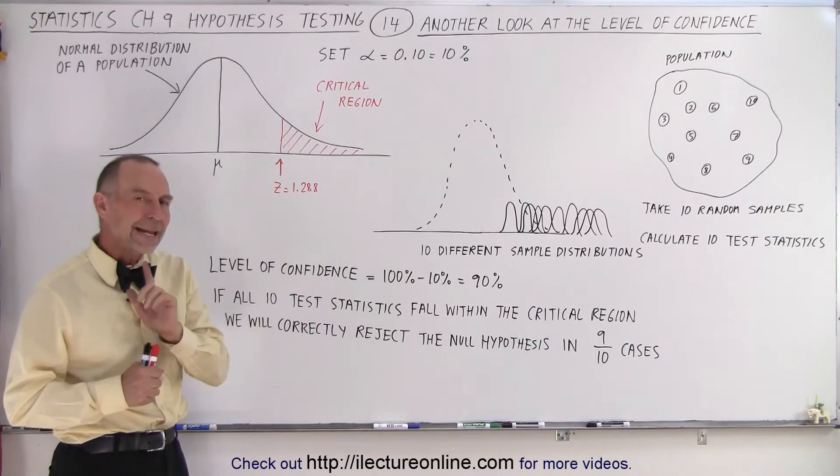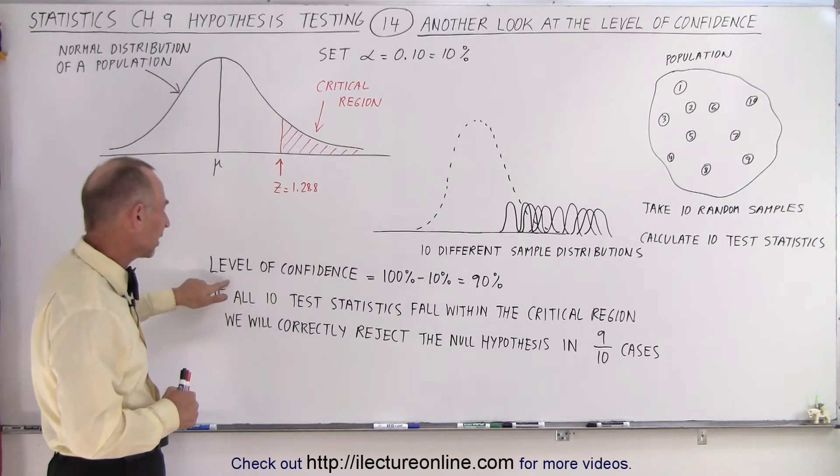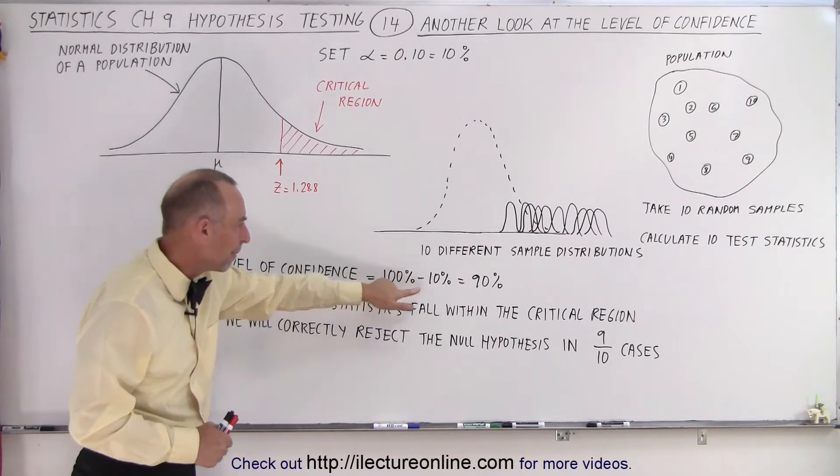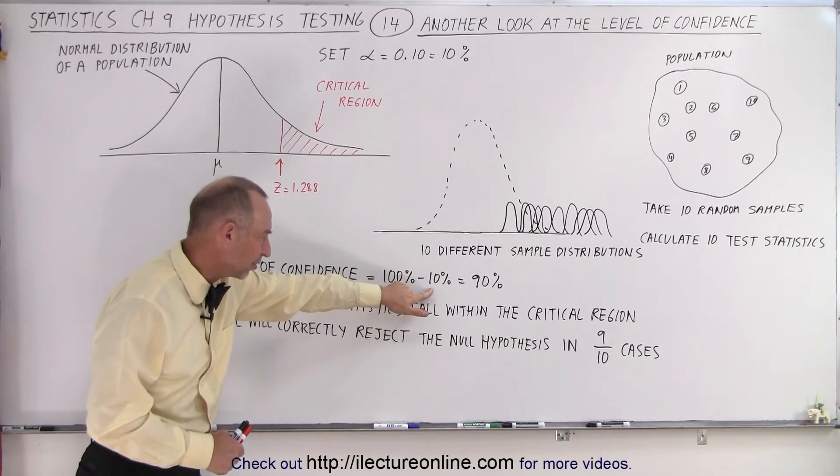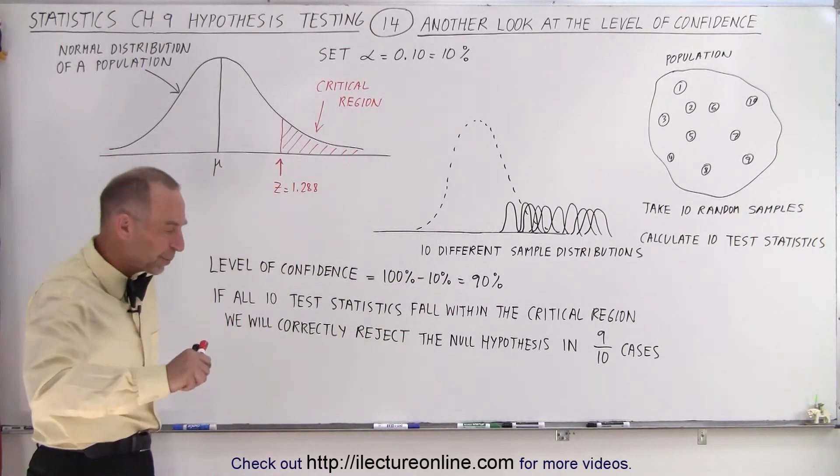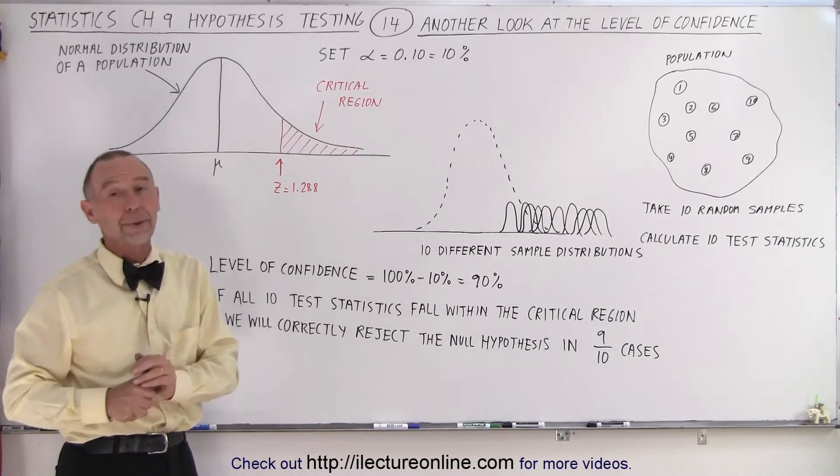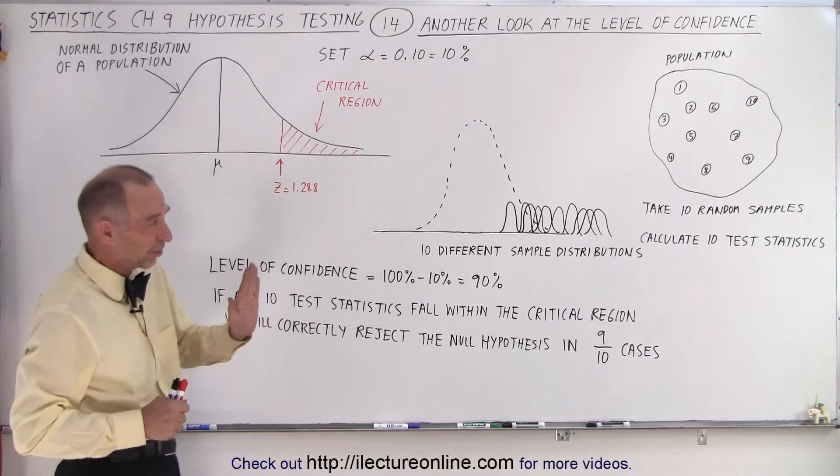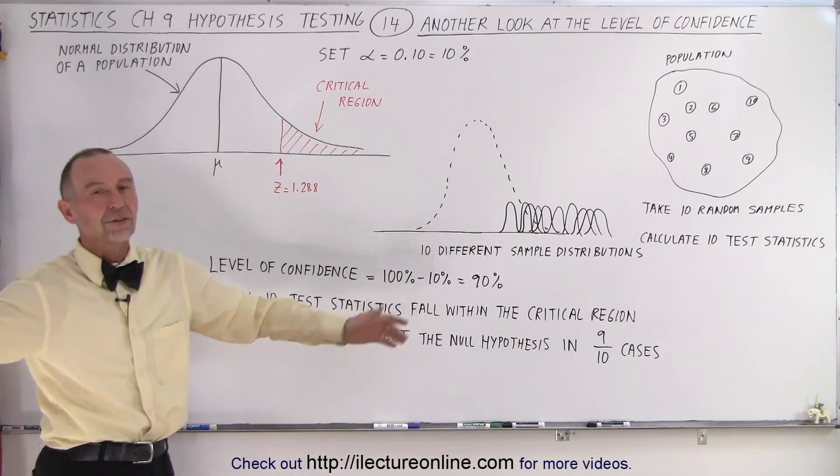Then there's a 90% probability, because the level of confidence is 100% minus the level of significance, which is 10%, that gives us 90%. So there's a 90% probability that if we reject the null hypothesis, since our test statistic falls in the critical region, that we made the right decision.